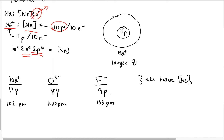These numbers now make a lot of sense. A picometer is 1 × 10⁻¹² meters — even smaller than a nanometer, in fact 1,000 times smaller than a nanometer.